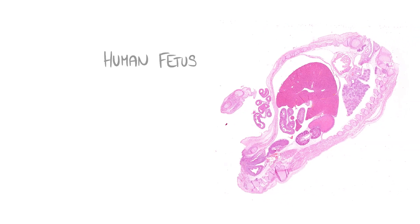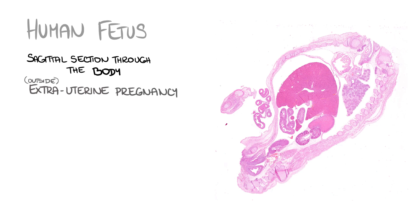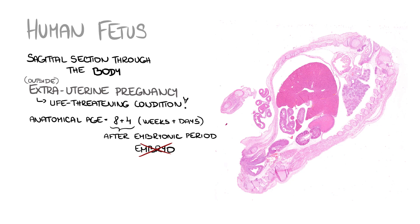In this video I would like to describe a slide of a human fetus, specifically a sagittal section through the body of the fetus obtained from an extrauterine pregnancy — pregnancy outside the uterus. Extrauterine pregnancy is a life-threatening condition. The fetus has no chance to develop and survive in the environment outside the uterus and it's a great threat to the mother's life. The fetus is of anatomical age 8 plus 4, that means 8 weeks and 4 days, which is already after the embryonic period, so we are talking about a fetus, not an embryo.